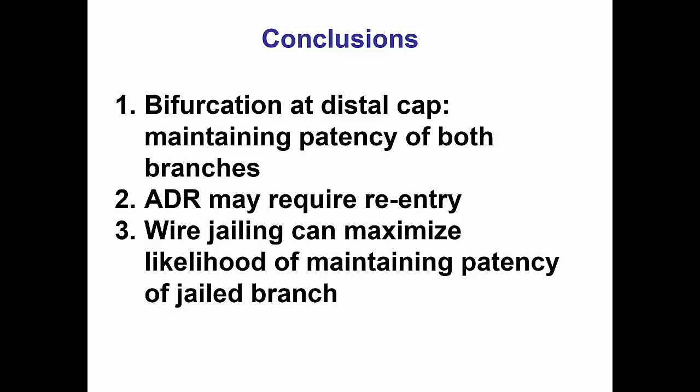In summary, there are several lessons from this case. The first is that for lesions with a bifurcation at the distal cap, keeping the patency of both branches is desirable. That can sometimes be a challenge if antegrade dissection reentry is used, because that may lead to subintimal crossing and occlusion of one of the branches when balloon and stenting is performed. In this particular case, the CrossBoss allowed true-to-true lumen crossing into the distal circumflex.